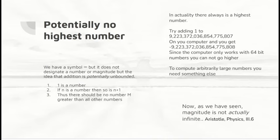In actuality there always is a highest number, the point I made about running out of space in your jotter. If you try adding 1 to this very large number, 9223372036854775807 on a contemporary computer, you will not get what you expect, but you'll get a minus number. And that's because the computers work with 64-bit numbers and you can't go any higher.